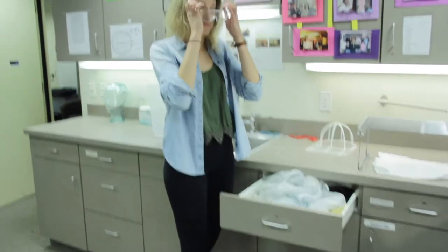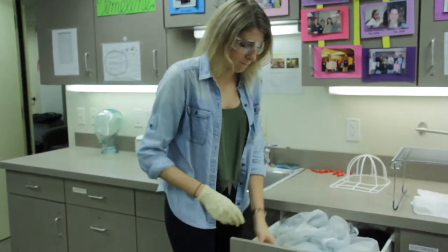Put on goggles and gloves located in the drawer to the right of the sink. If you want to protect your clothes, use the raincoat.